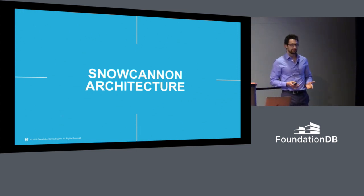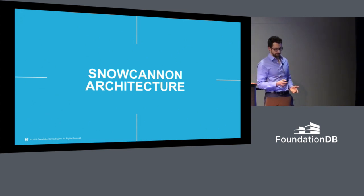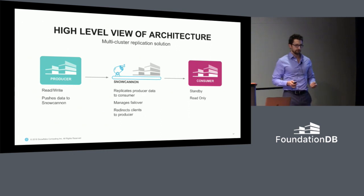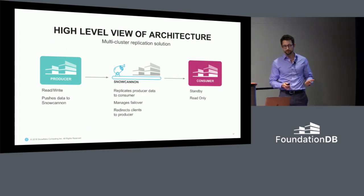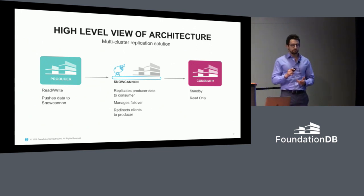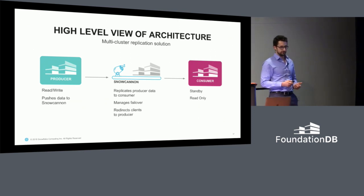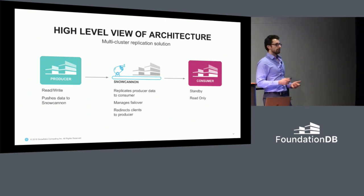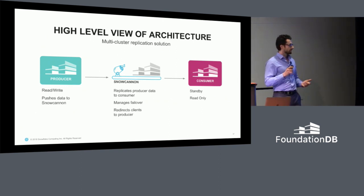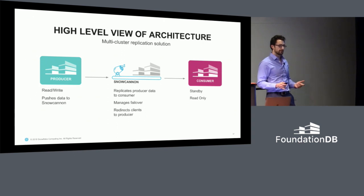Now that we've talked about Snowflake's requirements and the motivation behind Snow Cannon, I want to go into the architecture. Snow Cannon is a multi-cluster replication solution built on top of FDB. The producer cluster pushes data synchronously to the Snow Cannon cluster, which buffers and batches it and pushes it asynchronously to the consumer cluster. The consumer can act as a standby. The Snow Cannon cluster is responsible for maintaining your replication factor, managing failover correctly, and ensuring clients know which cluster to currently talk to.